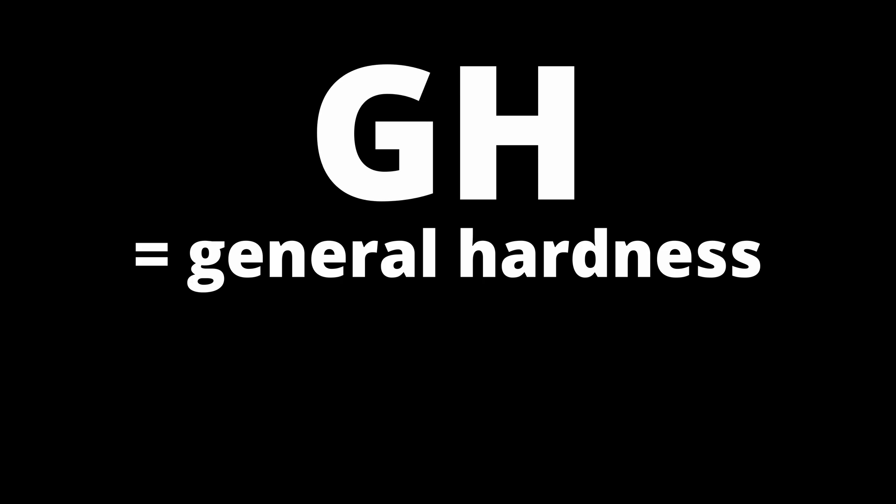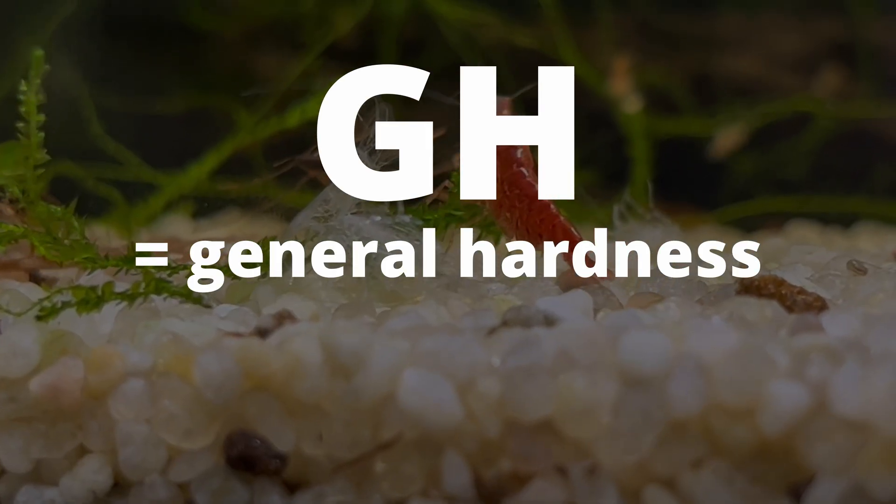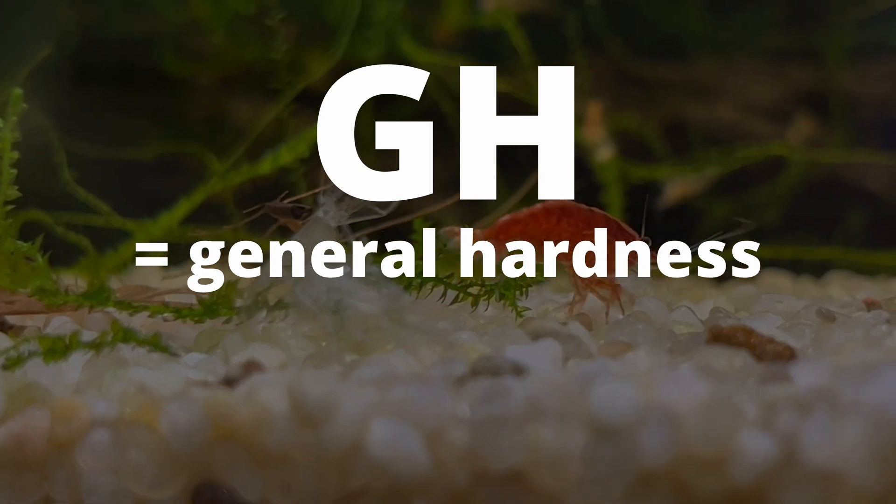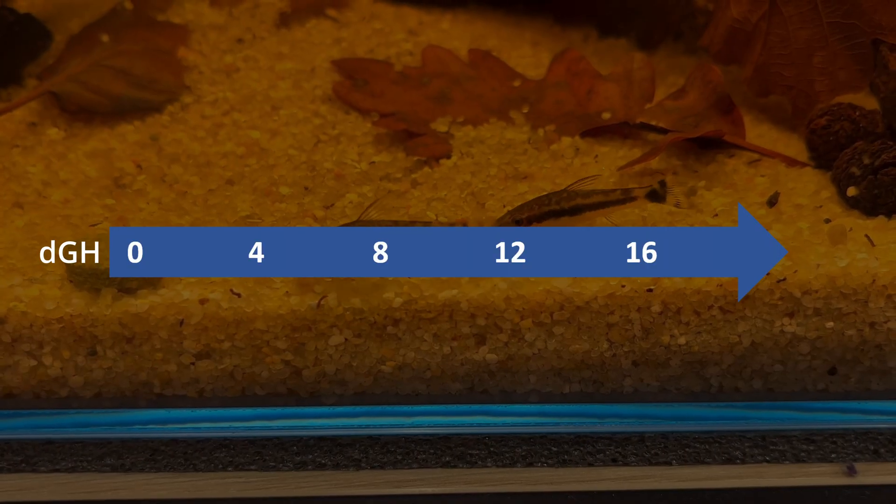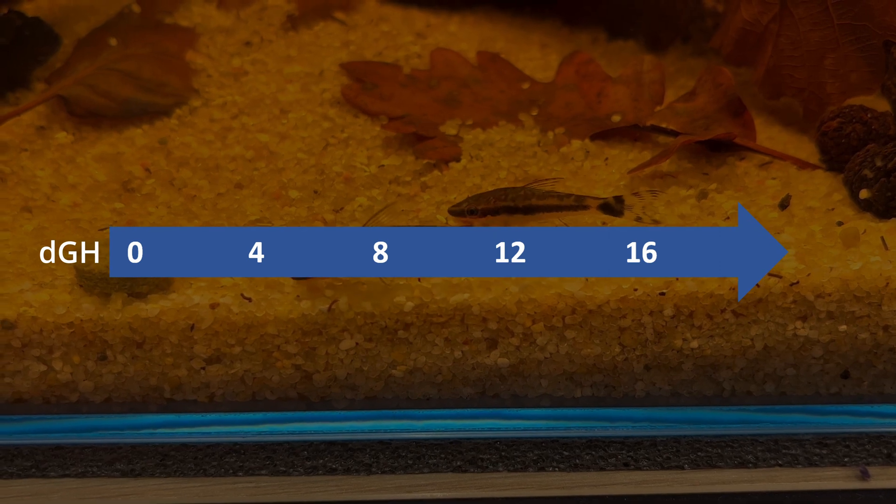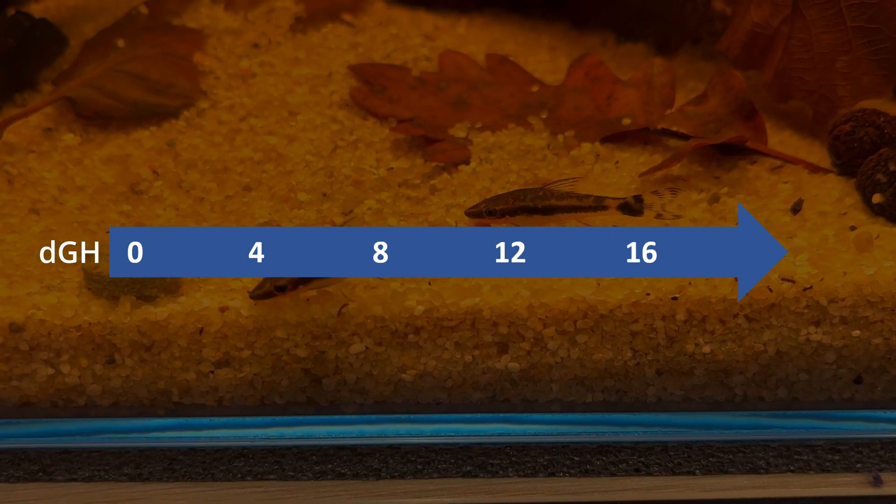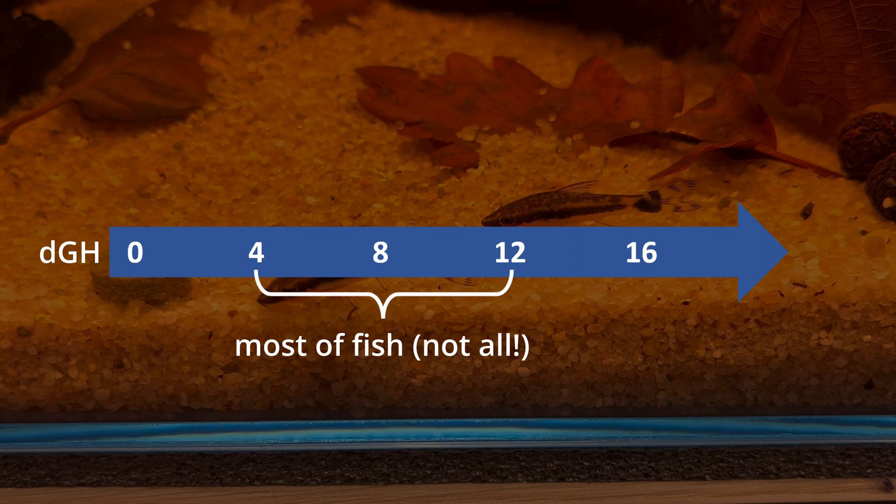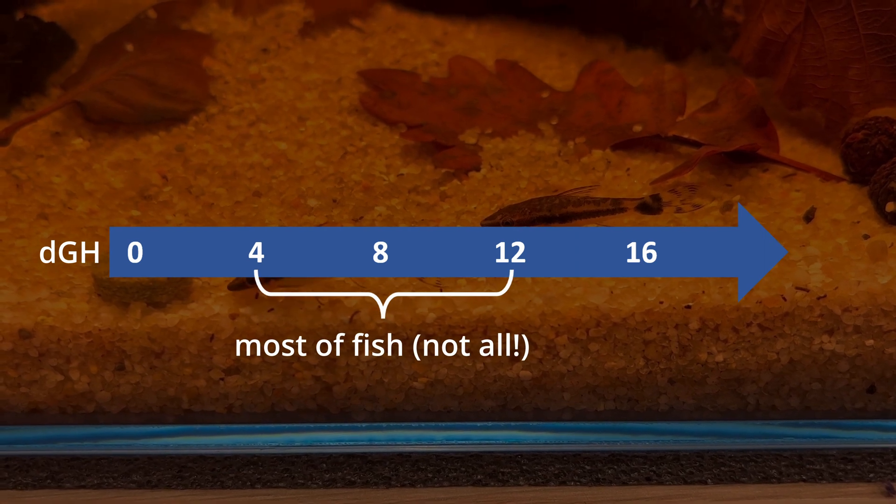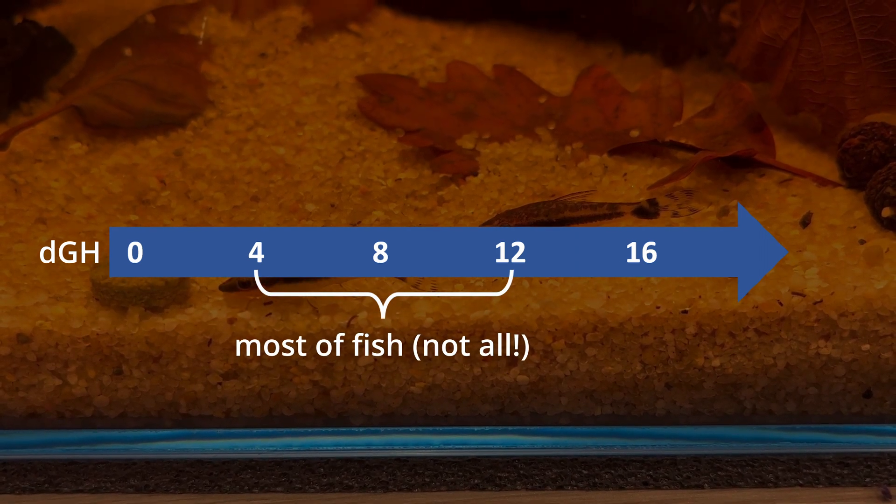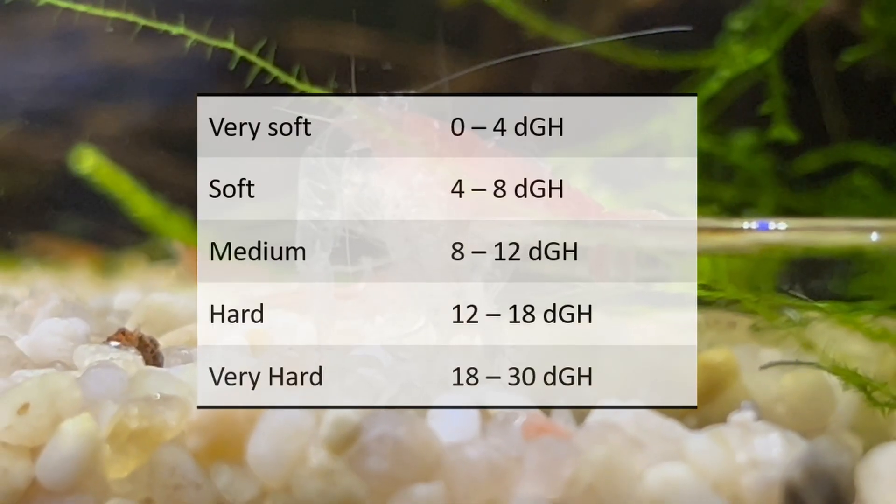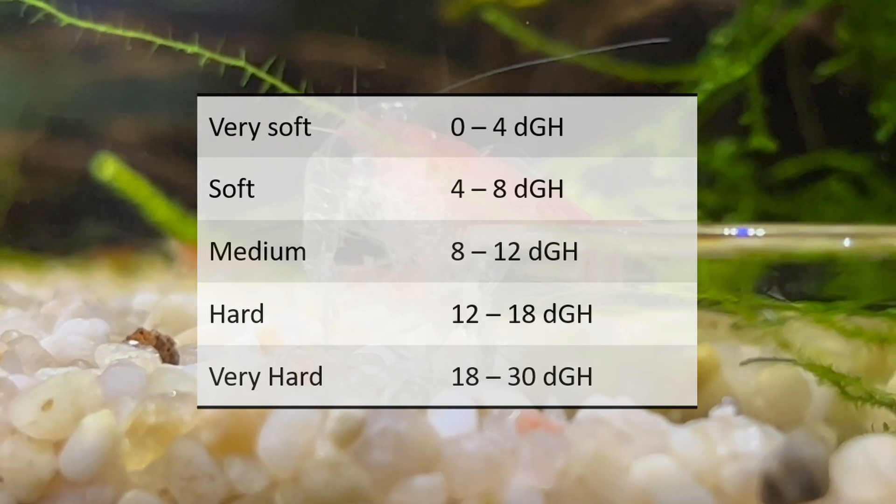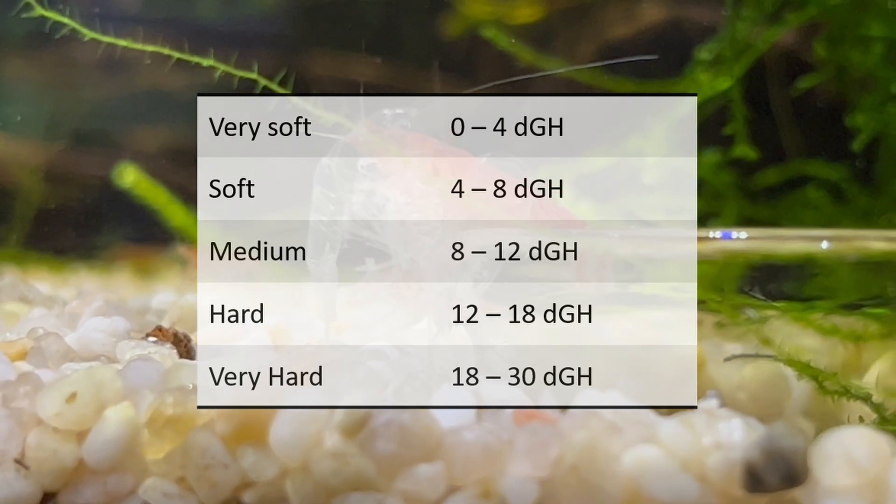Which is GH or general hardness. So GH measures the amount of calcium and magnesium ions in the water. Just like KH is measured in degrees. And in general for freshwater fish, we should keep it between 4 and 12. And again, this is very species related. So if someone is asking you how hard or soft your water is, they actually mean GH.